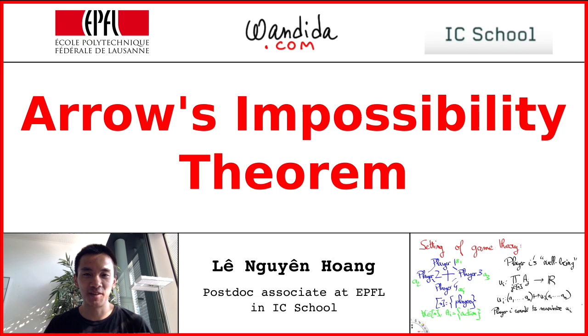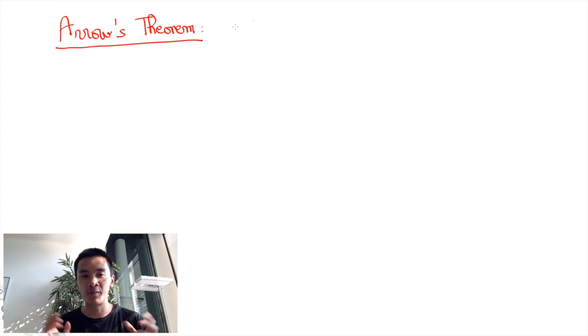In this video, I will present Arrow's Impossibility Theorem and sketch a proof of it. Informally, Arrow's theorem asserts that there is no fair way to aggregate individual preferences into a group preference.